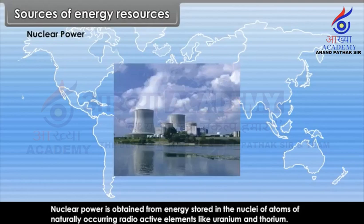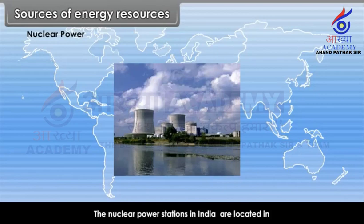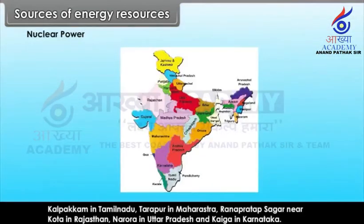Nuclear power is obtained from energy stored in the nuclei of atoms of naturally occurring radioactive elements like uranium and thorium. These fuels undergo nuclear fission in nuclear reactors and emit power. The greatest producers of nuclear power are USA and Europe. The nuclear power stations in India are located in Kalpakkam in Tamil Nadu, Tarapur in Maharashtra, Rana Pratap Sagar near Kota in Rajasthan, Narora in Uttar Pradesh and Kaiga in Karnataka.